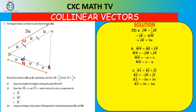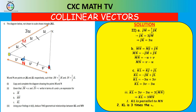Deducing two geometrical relationships between KL and MN: first, KL = 3v − 3u = 3(v − u) = 3 × MN, so KL is three times the length of MN. Second, since KL is a scalar multiple of MN, vector KL is parallel to vector MN — they are going in the same direction.